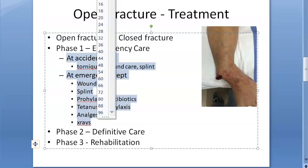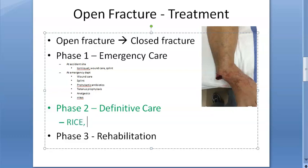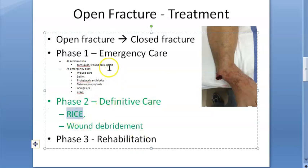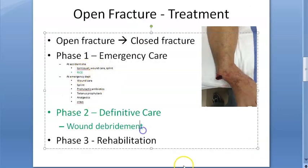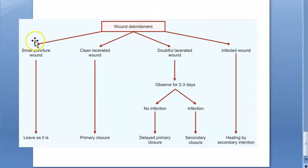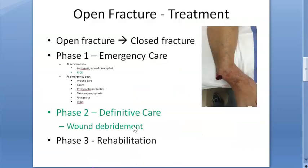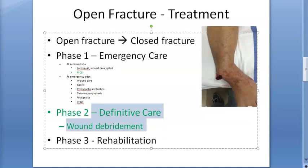Now moving to phase two, definitive care. The first step is wound debridement. The flowchart is: a small puncture wound - leave it as is; an open lacerated wound - primary closure; a doubtful lacerated wound - observe, and if non-infected then close it, if infected do secondary closure; an infected wound - healing by secondary intention. Basically, only clean wounds are candidates for primary closure.